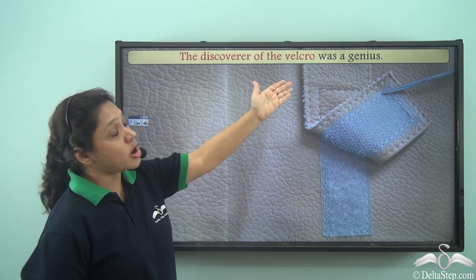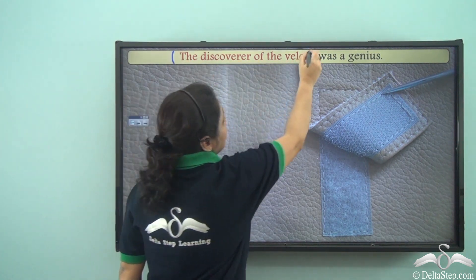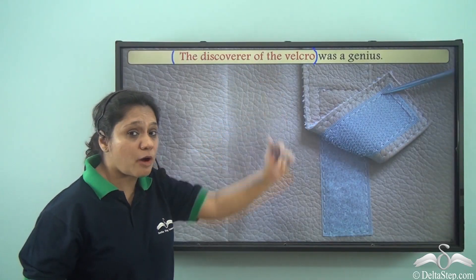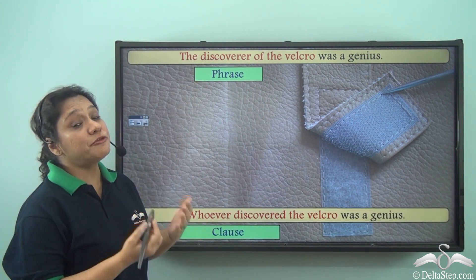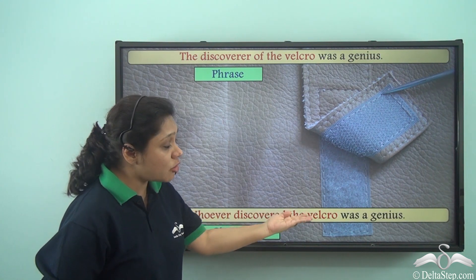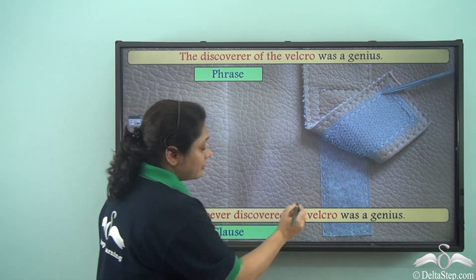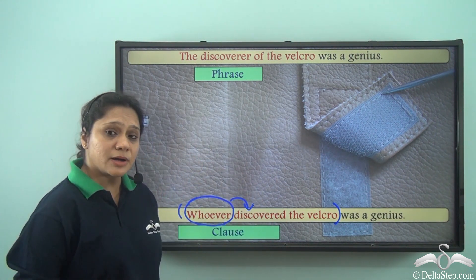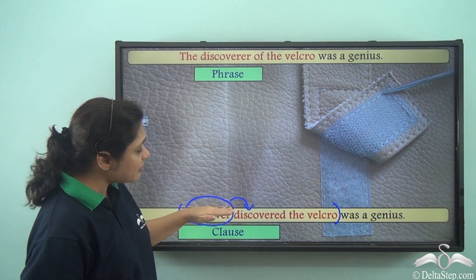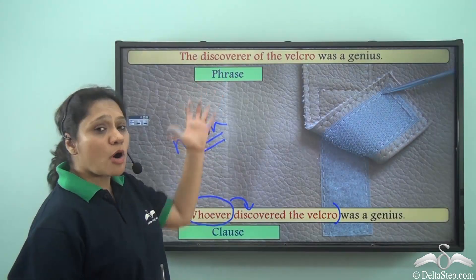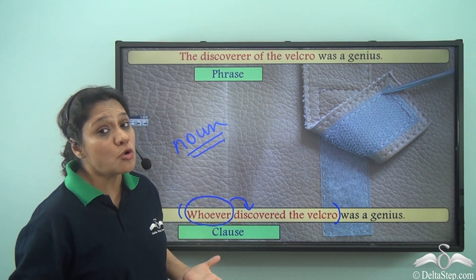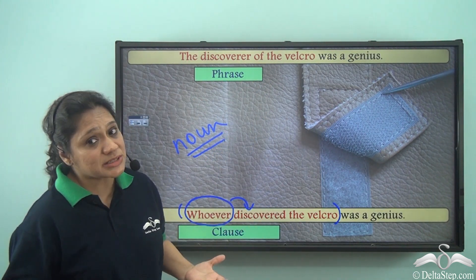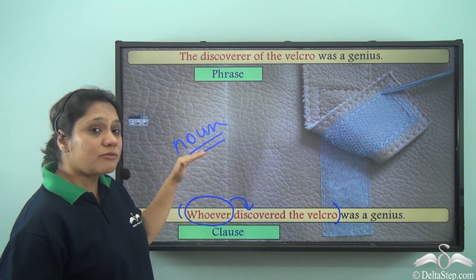Consider 'The discoverer of the velcro was a genius.' So 'the discoverer of the velcro' is a group of words which does not have a subject doing a verb, so this group of words is a phrase. And if we rewrite the sentence as 'Whoever discovered the velcro was a genius,' then 'whoever discovered the velcro' has a subject doing a verb — 'discovered' — so it is a clause. In both cases, the phrase and the clause answer the question 'who was a genius,' and both do the work of a noun.